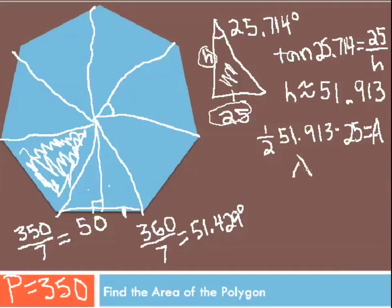So the area of the right triangle ends up being 648.913. That is, if I'm coloring it in here, the area of one of these right triangles. Now notice, there are two right triangles here.